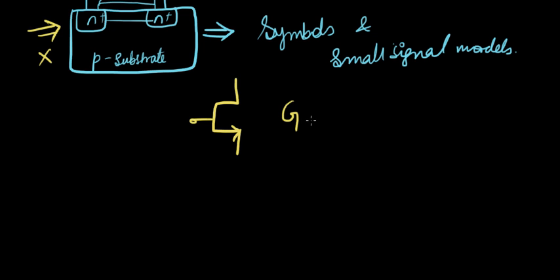One is gate, the other is source, and the other is drain. Now let's connect the three to look like a circuit.